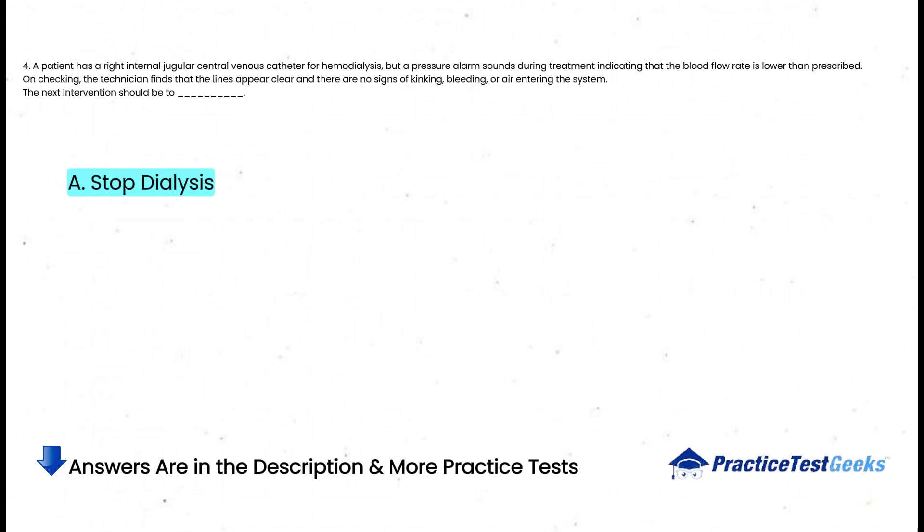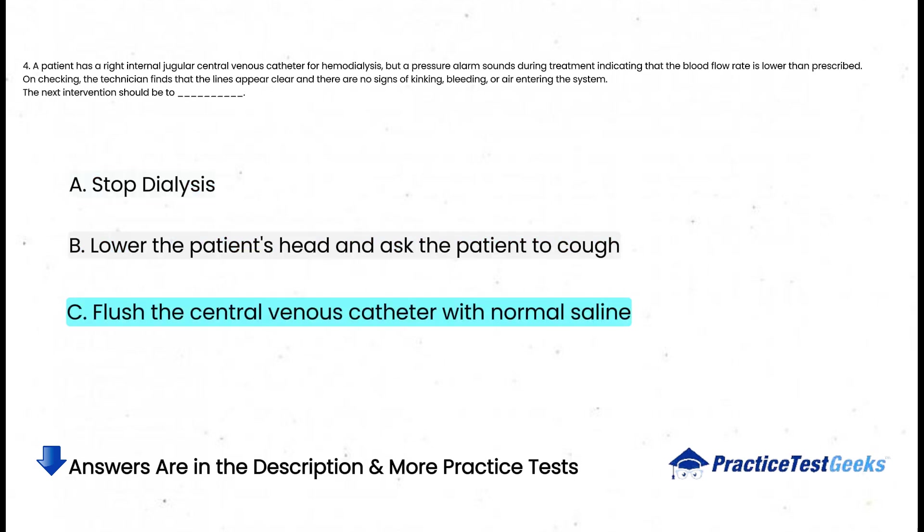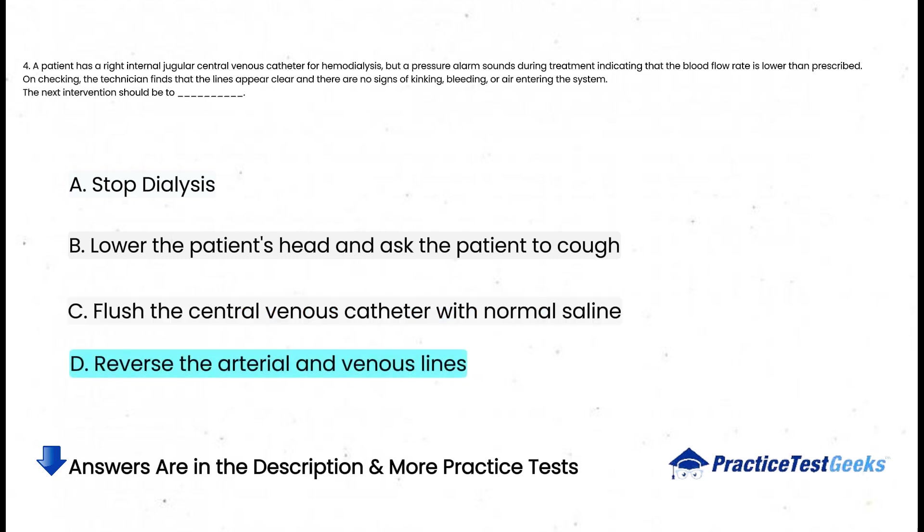A patient has a right internal jugular central venous catheter for hemodialysis, but a pressure alarm sounds during treatment indicating that the blood flow rate is lower than prescribed. On checking, the technician finds that the lines appear clear with no signs of kinking, bleeding, or air entering the system. The next intervention should be to: a. Stop dialysis, b. Lower the patient's head and ask the patient to cough, c. Flush the central venous catheter with normal saline, d. Reverse the arterial and venous lines.